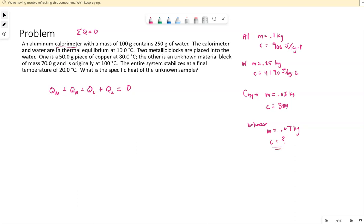So this would be an example of an experiment that could be done. Let me go ahead and write the temperatures by them as well. So we have our aluminum and water both initially at 10 degrees Celsius. The calorimeter and water are in thermal equilibrium, meaning they have the same temperature. The copper is initially at 80 degrees Celsius, and this unknown material is initially at 100 degrees Celsius.